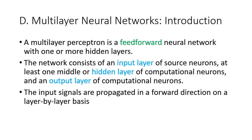To recap, in previous videos we talked about the neuron and perceptron learning algorithm. We did training of epoch one of an AND truth label, but that training was for a single perceptron.